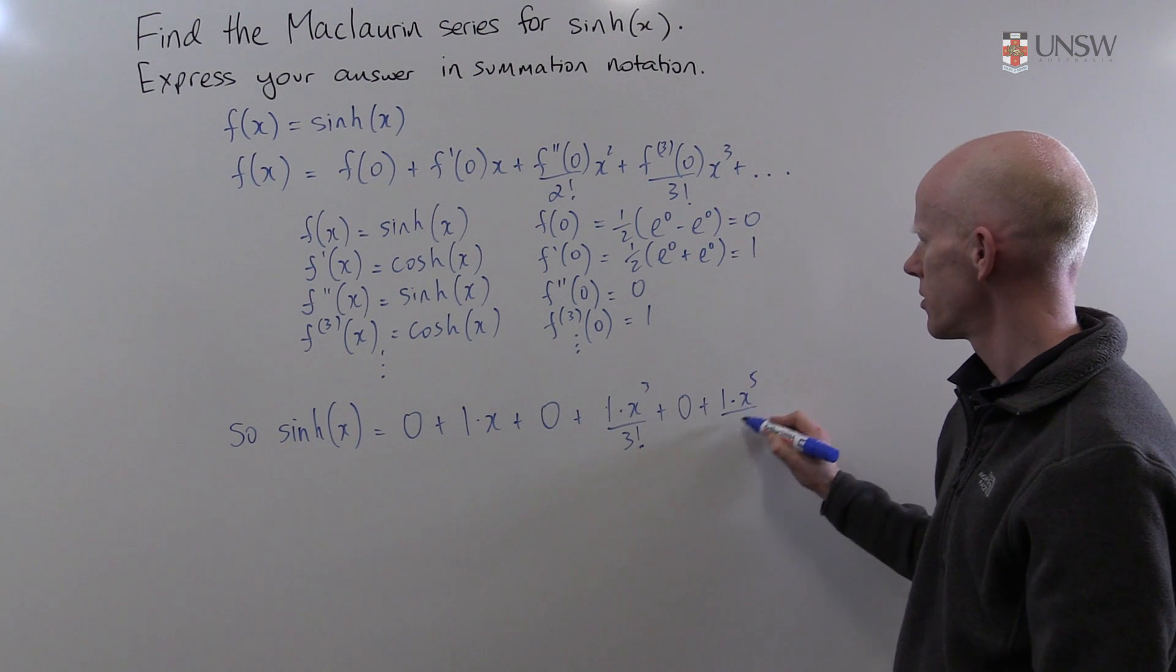And you can see we have a pattern here. The Maclaurin series of sinh consists of odd powers of x divided by the factorial of that power. So I could write down the next term: it's going to be 1 times x to the power of 5 over 5 factorial and so on.